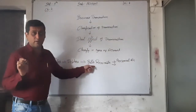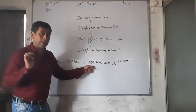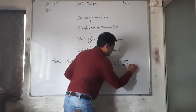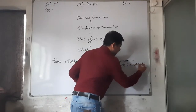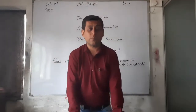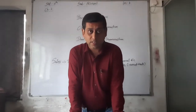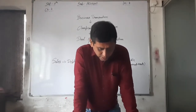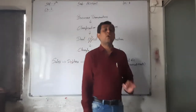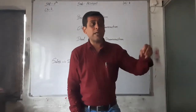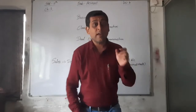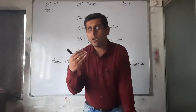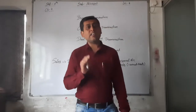Bills receivable is also our asset — we have to receive some money from the debtor — so it is also a current assets account. You can write that bills receivable is a personal account as well as a current assets account. Next, value-added tax account: any tax is an expense of the business — tax we have to pay to the government — so VAT, GST, any tax is your expense and therefore it is a nominal account.